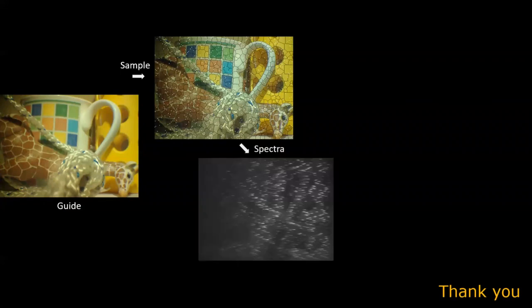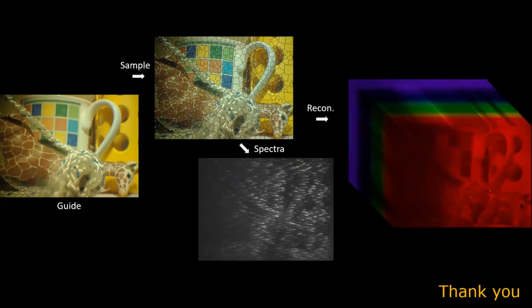In conclusion, we proposed an adaptive hyperspectral imaging setup that starts by capturing an RGB image of the scene, which is then used to adaptively select sampling points. Spectra is then measured at these sampled points in the form of a single spatial spectral image. This sparse set of spectral profiles is then fused with the guide image to form a full resolution hyperspectral image at video rate. Thank you.